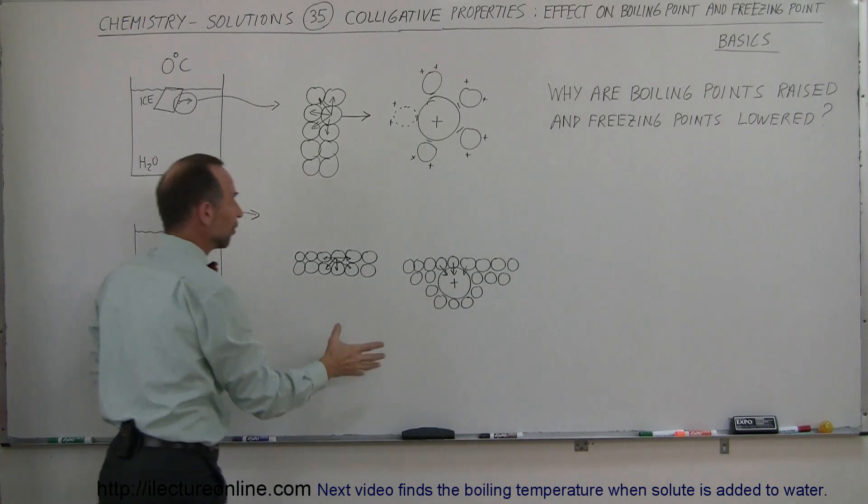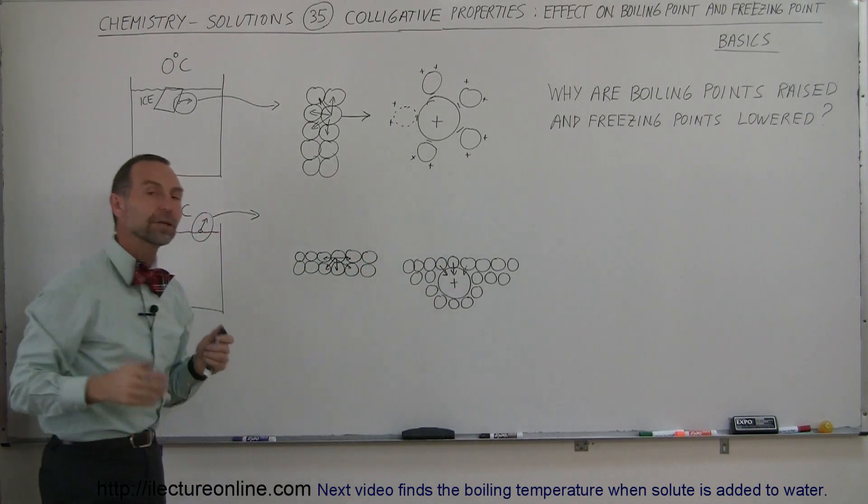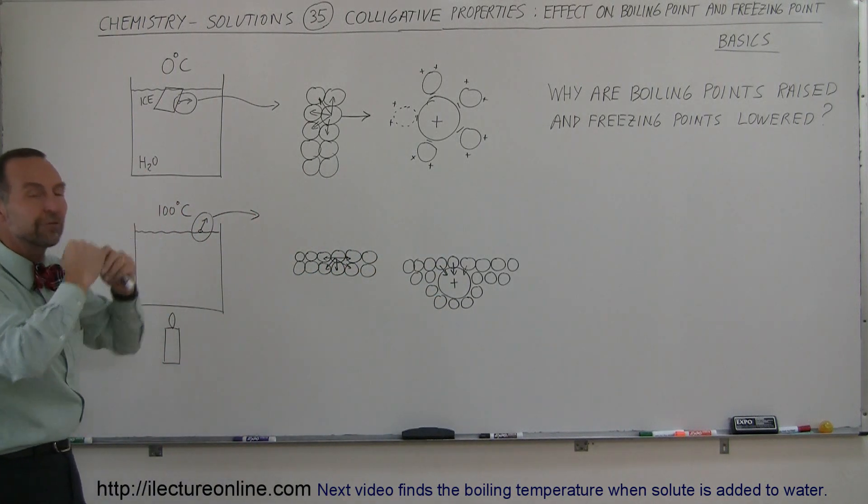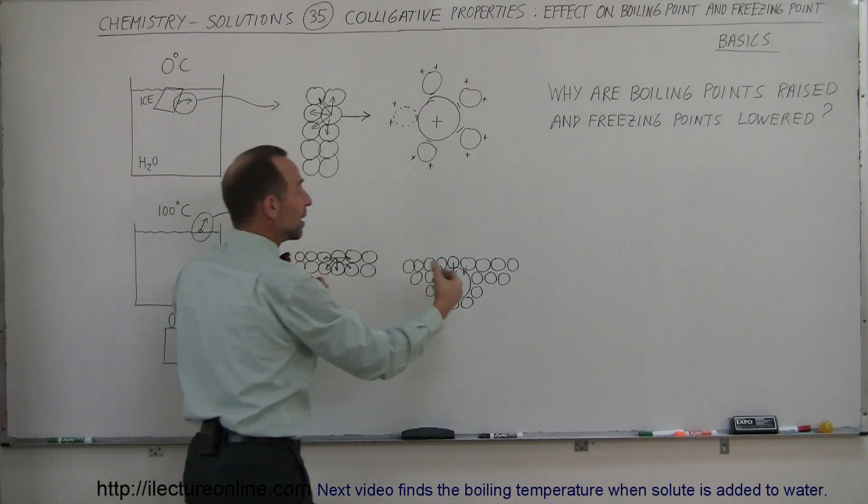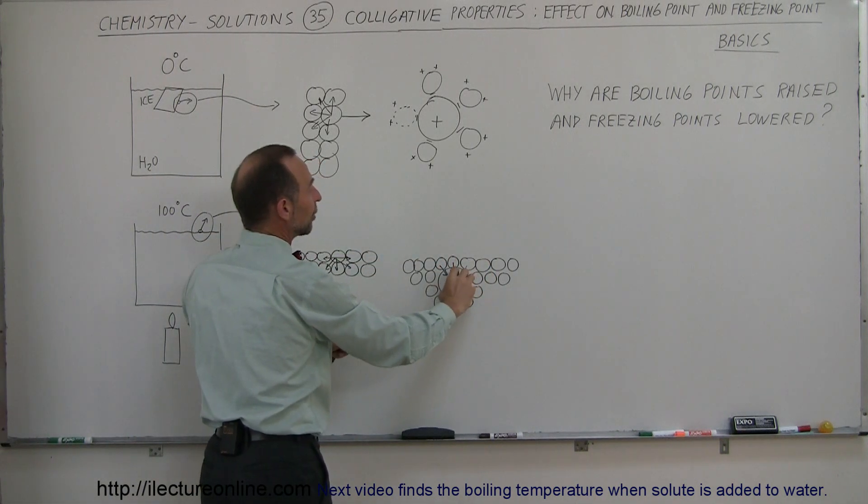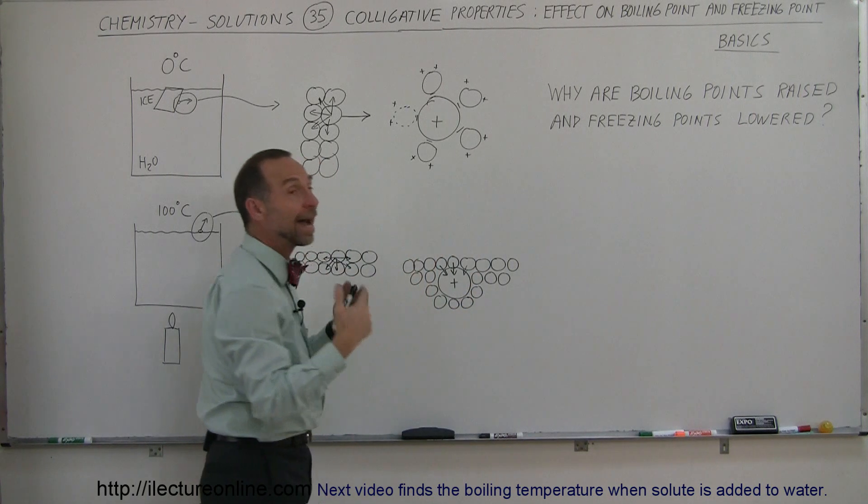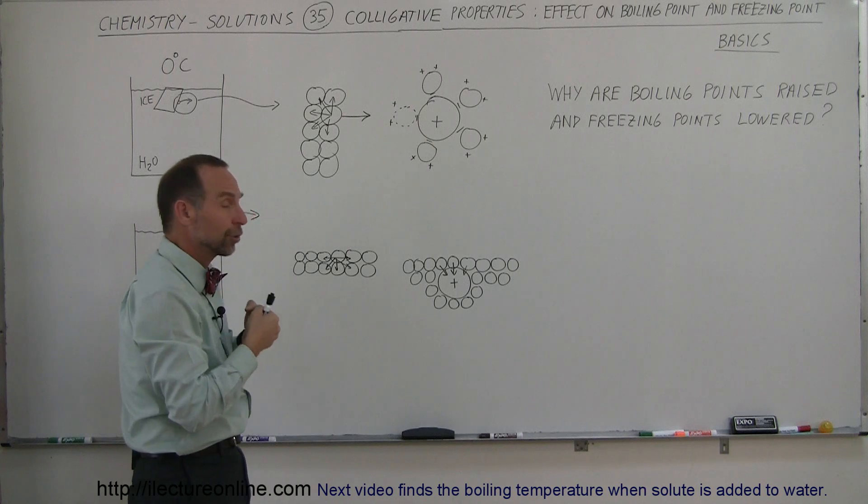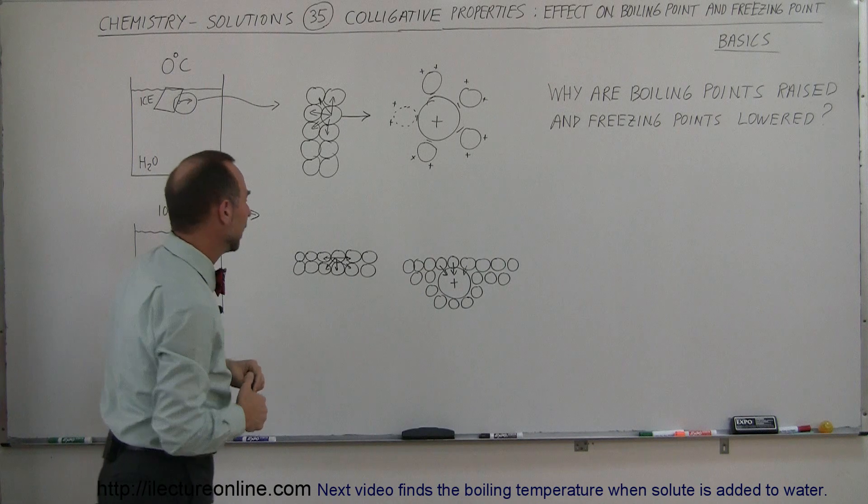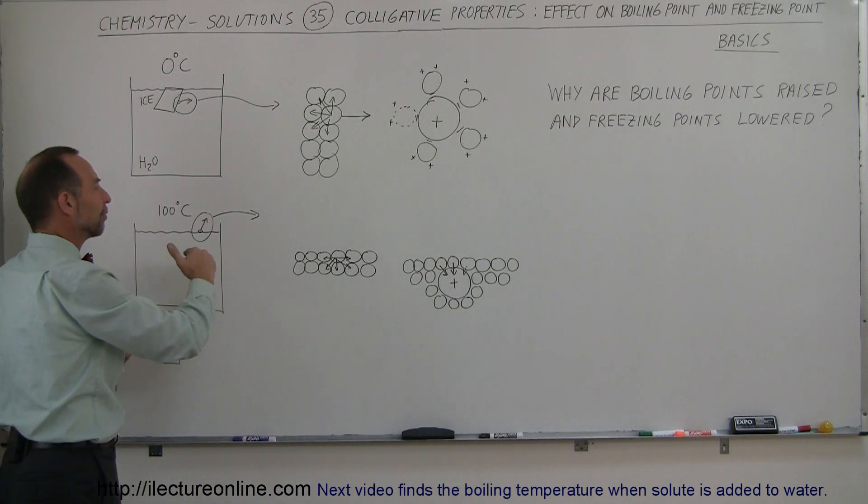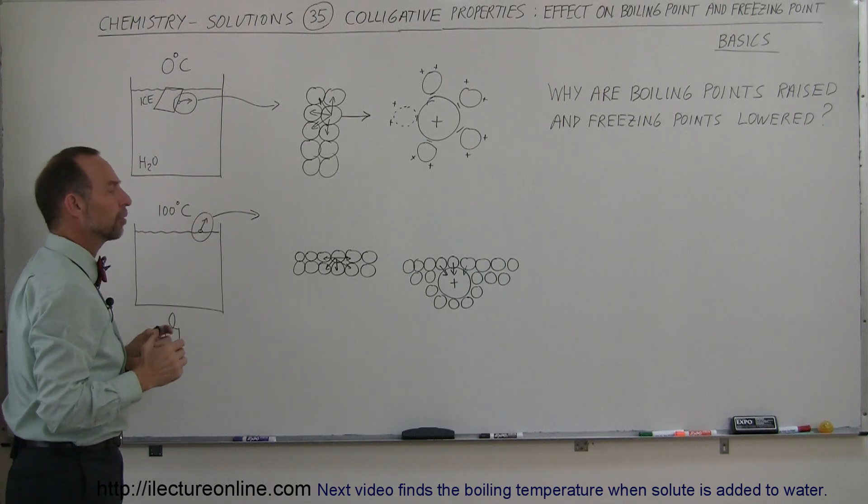So in effect, what happens is by adding a solute in a solvent like that, you actually lower the vapor pressure. It requires a little bit more heat to get the molecules to jump free away from the attraction of the other ions introduced into the solution, and then of course you'll end up with a higher boiling point because the molecules are not as free to jump away into the vapor phase because there's additional attraction down there, and so that will therefore raise the boiling point of water.